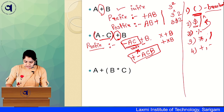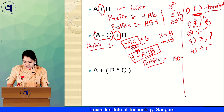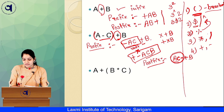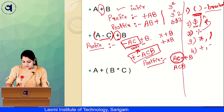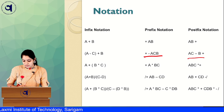If we want to convert the same expression to postfix, again solve the bracket first: 'A − C' becomes 'AC−'. Then treating that as one unit and adding 'B plus', the postfix form is 'AC−B+'. So that is the answer for postfix, as you can see here: 'AC−B+'.